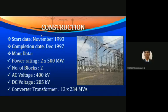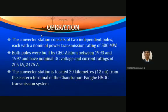This project was started in November 1993 and successfully completed in December 1997. The converter station consists of two independent poles, each with a nominal power transmission rating of 500 megawatts. Both poles were built by GEC Alstom between 1993 and 1997.